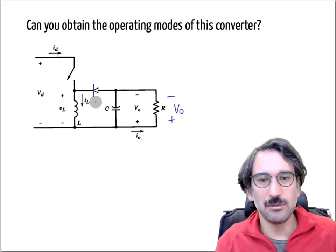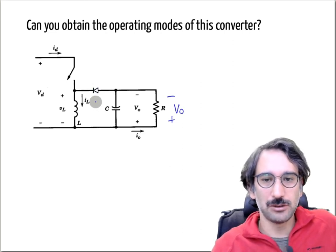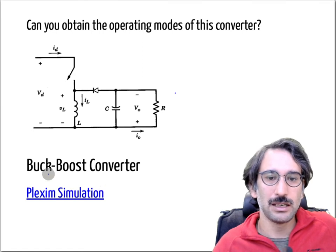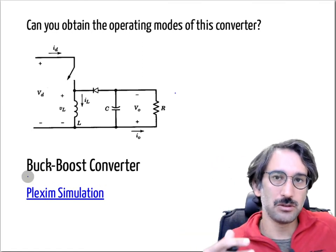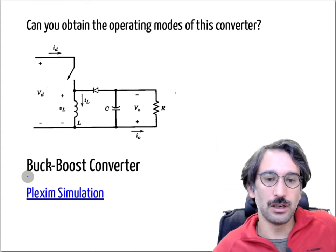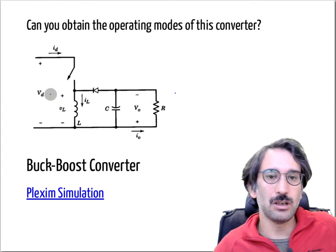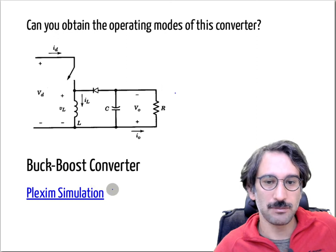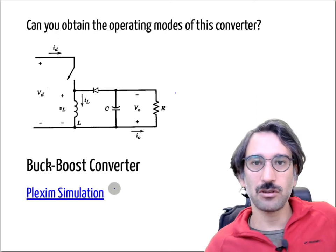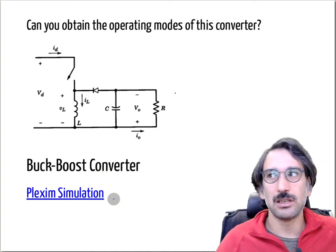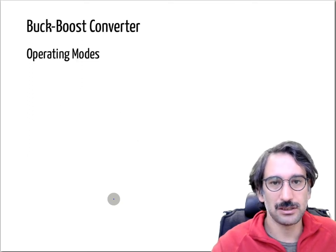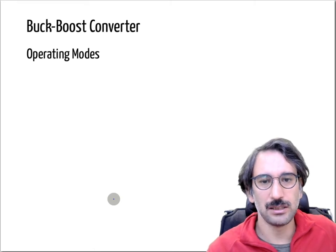The name of this converter is the buck-boost converter, and we will show it has the capability of both stepping down voltage and stepping up voltage. You can use it to generate an output voltage both smaller and larger than Vd — it is a combination of buck and boost converters. There is a simulation available, and I strongly advise you to open it and try different parameters to see their effects.